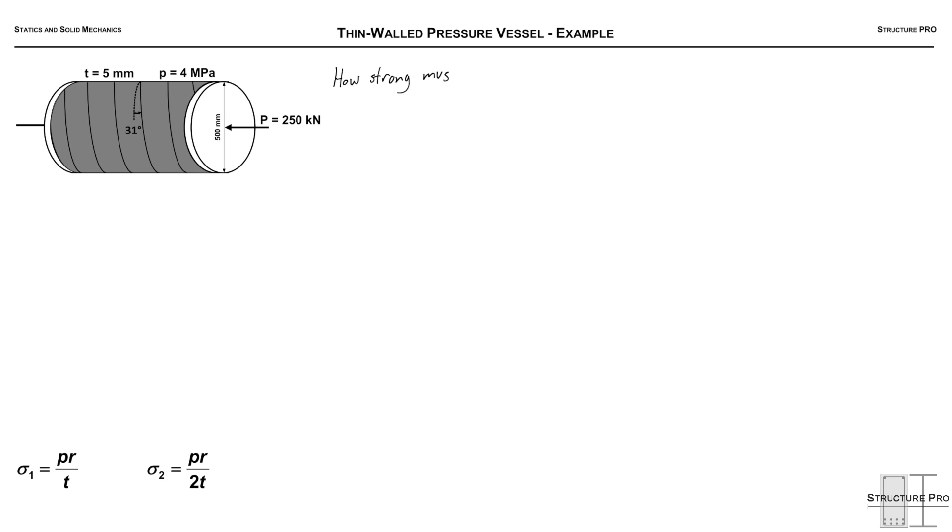So the question is how strong must the wall be on this thin-walled pressure vessel that's pictured here in a direct tension and b in shear? So we're going to be analyzing this thin-walled pressure vessel. It has rigid end plates that are being loaded in the middle with load P is 250 kilonewtons. It's got a pressure 4 MPa and let's just verify that this can indeed be treated as a thin-walled pressure vessel.